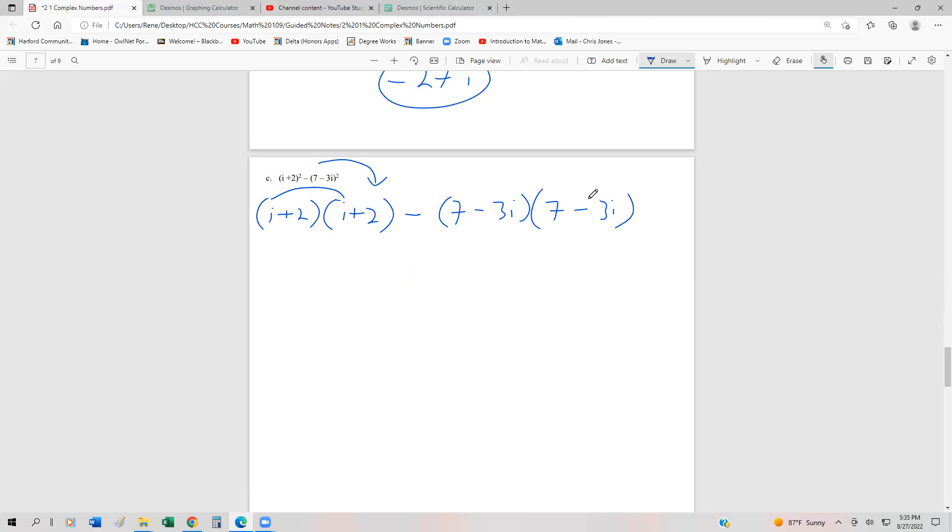So if we FOIL i times i, i times 2, that's going to be i squared plus 2i plus another 2i plus 4 minus – I'm going to put these in brackets. So that's 7 times 7, 49.